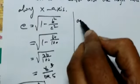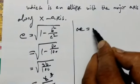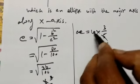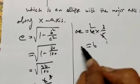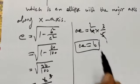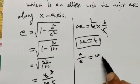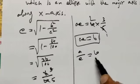Next, ae. a is 10, e is 3/5, so ae = 10 × 3/5 = 6. Therefore ae = 6.